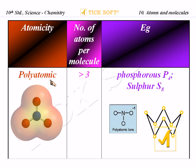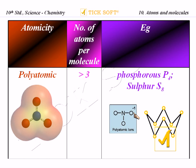For polyatomic molecules, the number of atoms per molecule is greater than three. Examples include phosphorus P4 and sulfur S8. Ammonia NH3 has one nitrogen and three hydrogen. The nitrate ion NO3- has one nitrogen and three oxygen atoms. Looking at the picture of S8, it is shaped like a ring — eight sulfur atoms combined together. This is how sulfur mostly exists in nature, and it is an amazing structure.